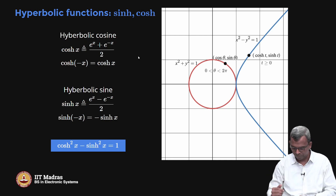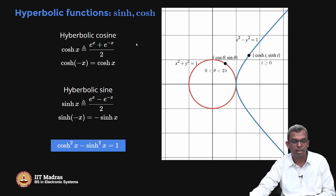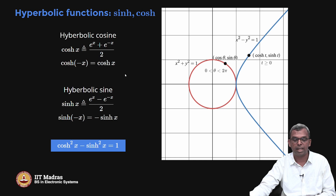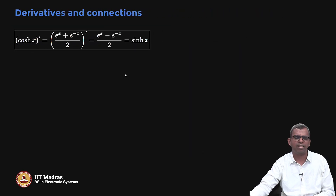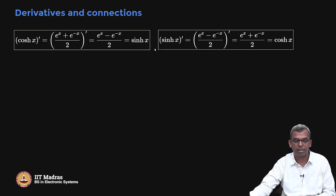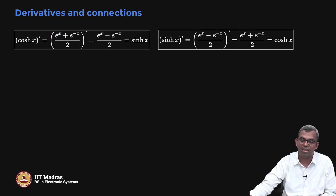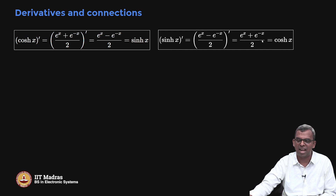So there are lots of nice relationships here, and we will be interested in properties of cosh and sinh. You can do derivatives — this is very easy. The derivative of cosh is sinh x, and the derivative of sinh is cosh x. There is no minus sign here, and the derivatives come out using the standard derivative formula.